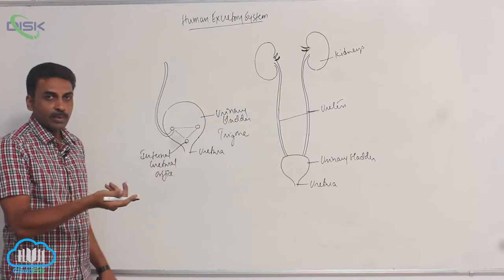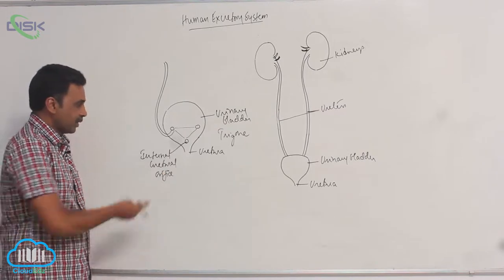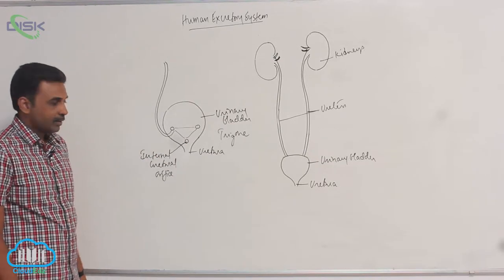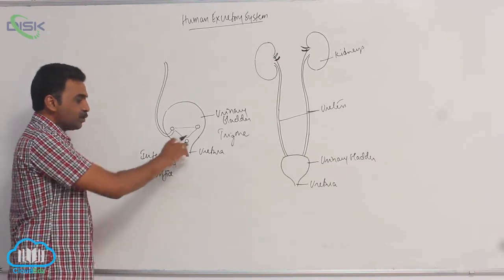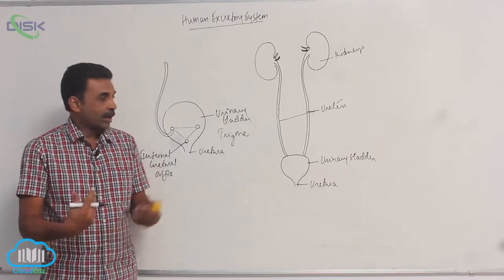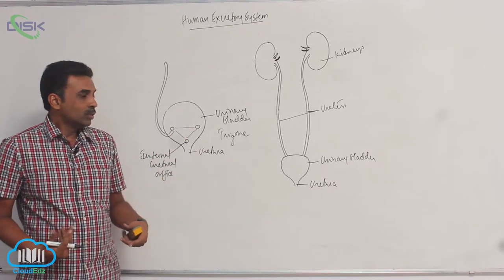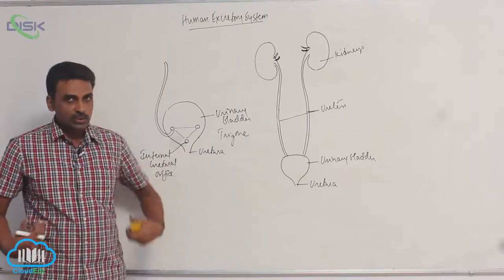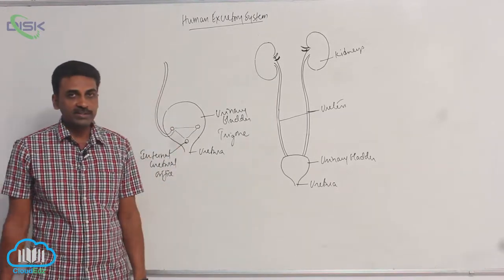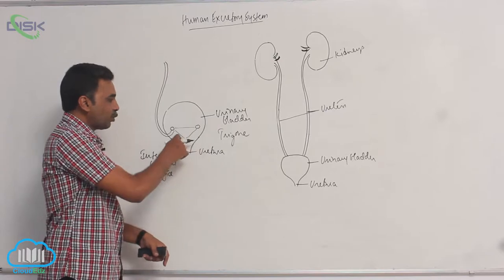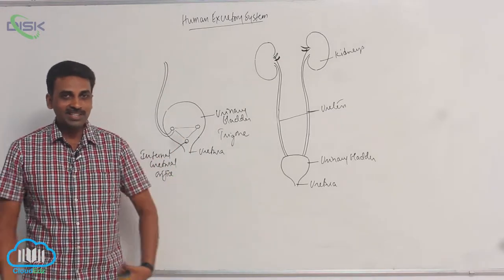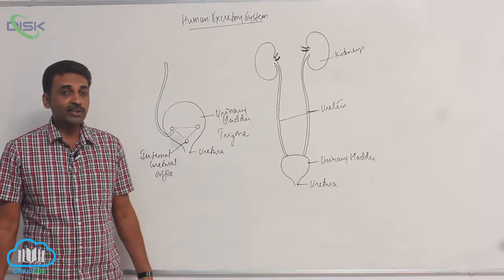The internal urethral orifice — orifice means opening — is the internal opening of the urethra. So the internal urethral orifice is present anteriorly, and the two openings of the ureters are present posteriorly. All three openings form a triangular area at the base of the urinary bladder.